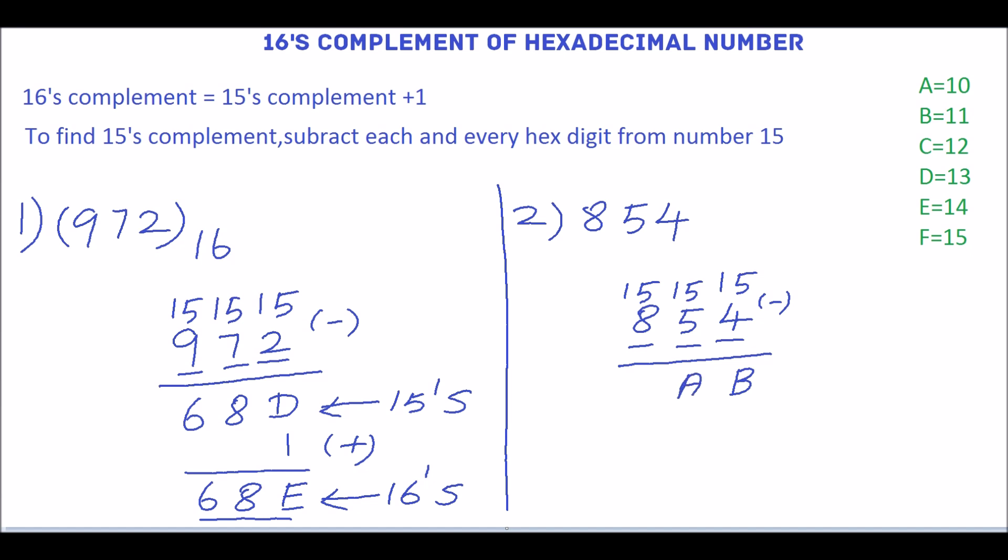15 minus 8 is 7, which is the 15's complement. Add 1 with this to get the 16's complement. B is